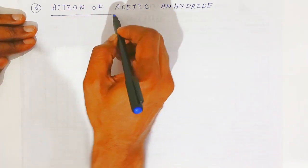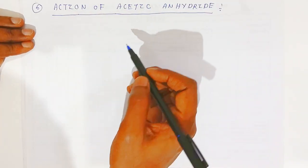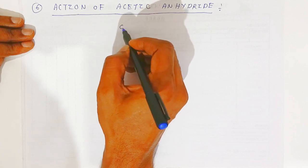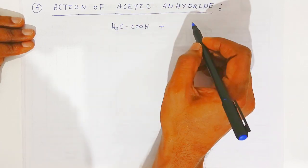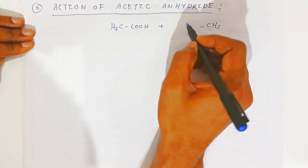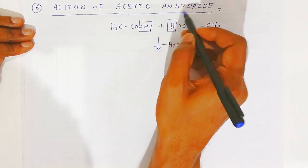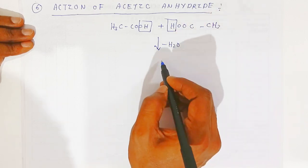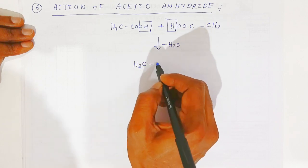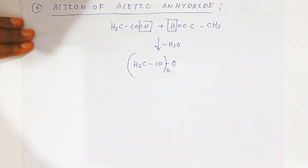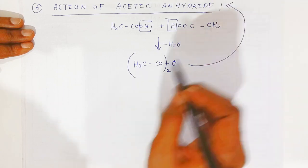The last property is the action of acetic anhydride. Acetic anhydride is made from acetic acid (CH3COOH). When two molecules of acetic acid undergo dehydration (removal of water), they form acetic anhydride, which has the structure CH3CO–O–COCH3.